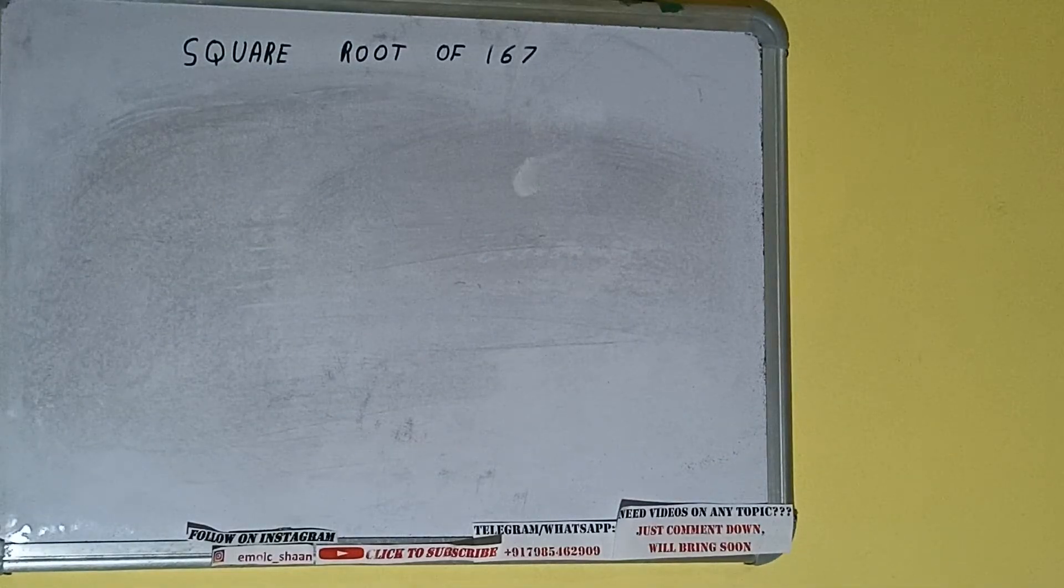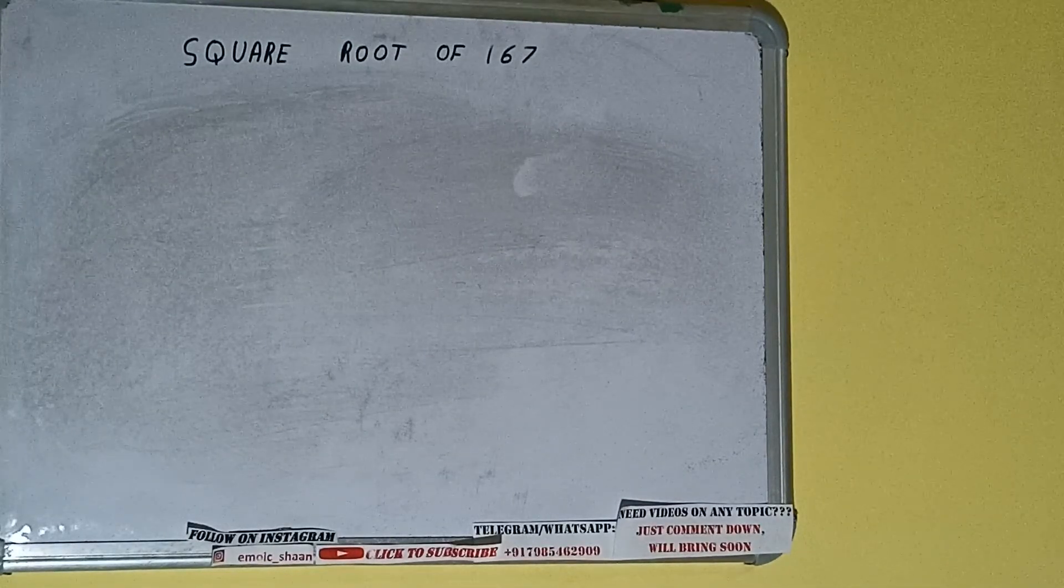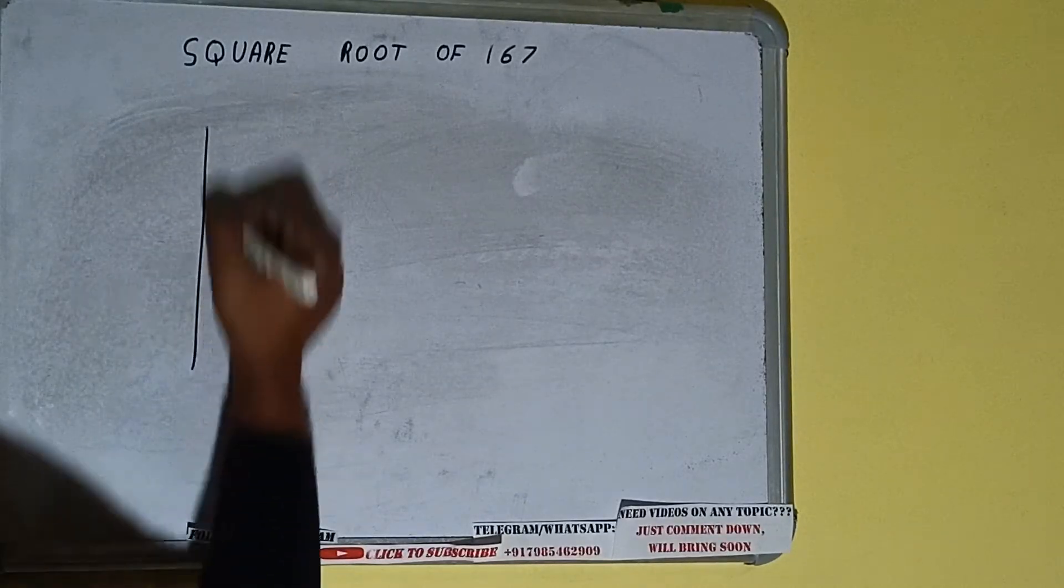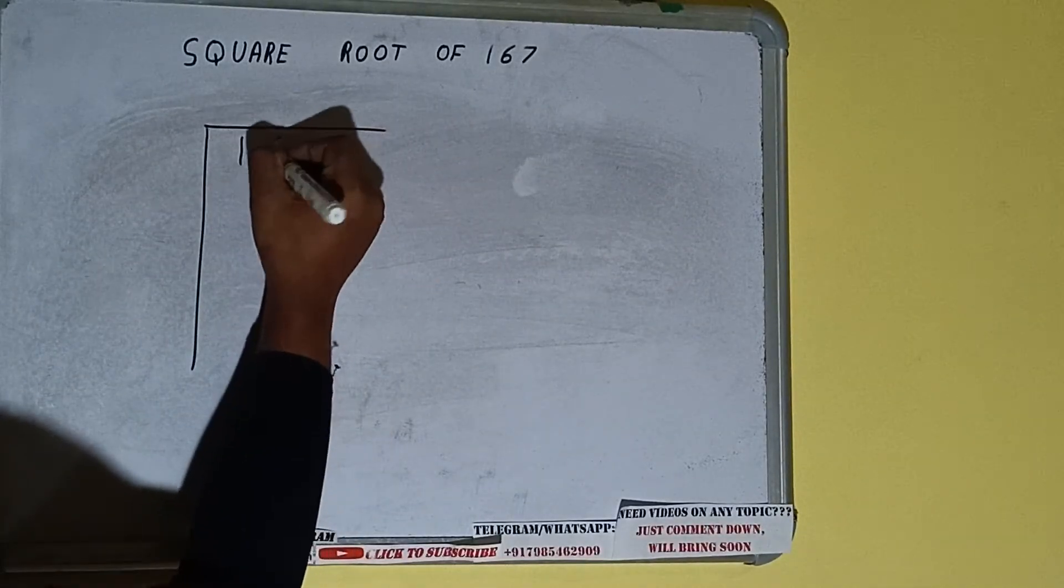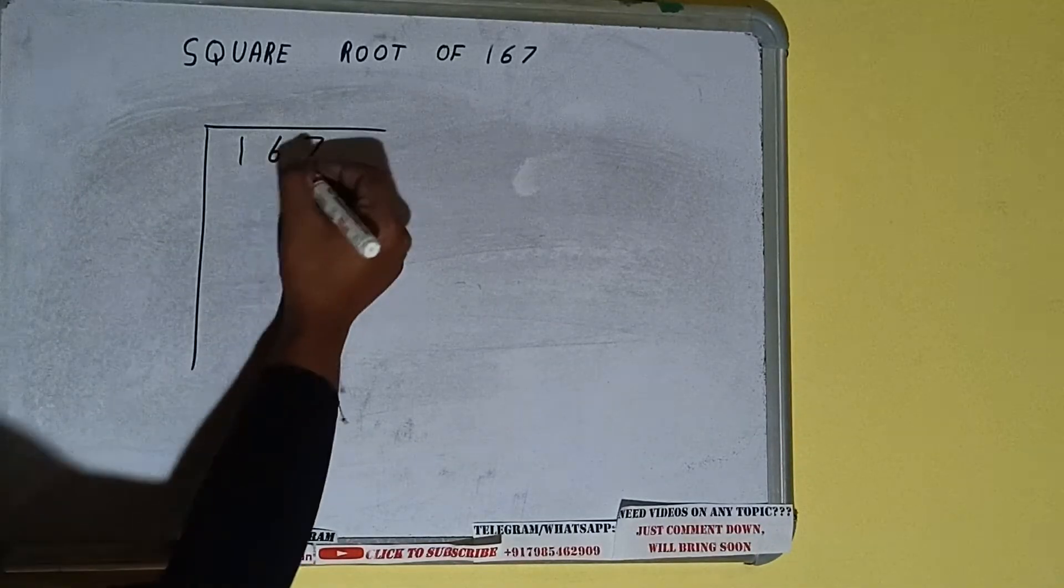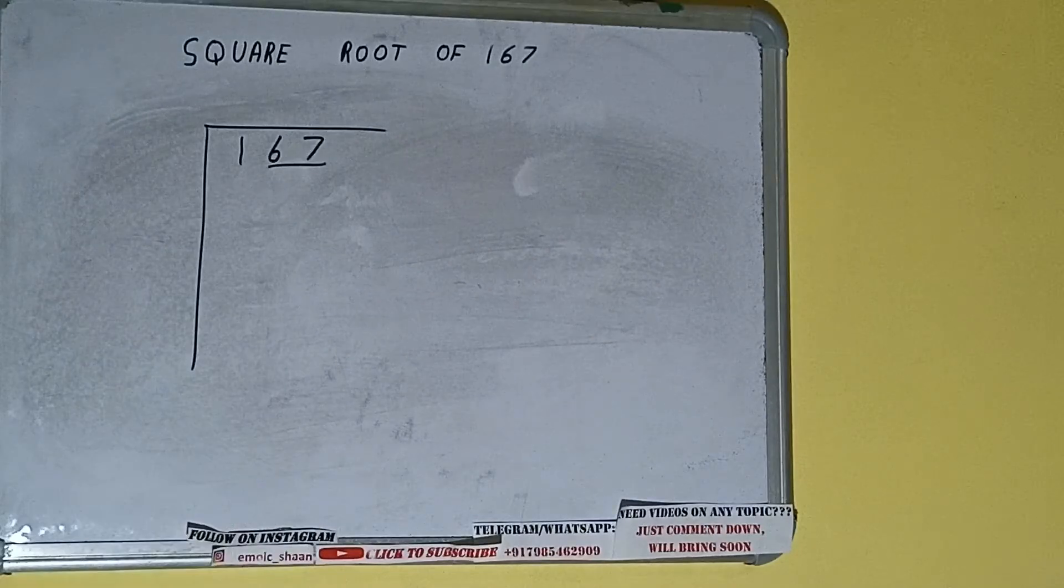Hello friends, and in this video I'll be helping you with the square root of the number 167. So let's start. First of all, we need to write the number like this. The next thing we need to do is form pairs from the right hand side. So one pair will be this and this one will be left out.